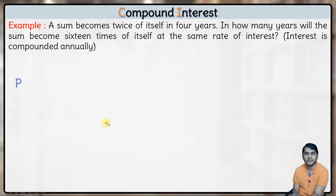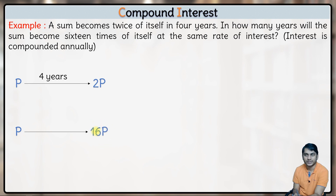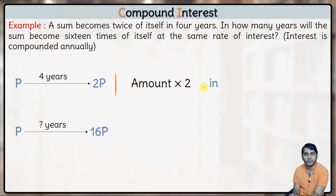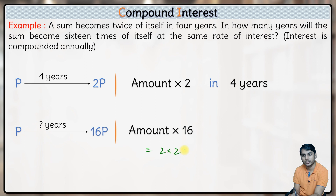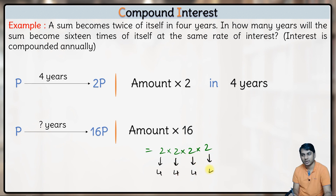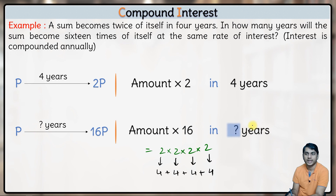One more example: A sum becomes twice itself in 4 years. In how many years will it become 16 times itself at the same rate? Since 16 = 2⁴ = 2 × 2 × 2 × 2, the amount needs to double four times. Each doubling takes 4 years. So total time = 4 × 4 = 16 years. It will take 16 years for the amount to become 16 times of itself.